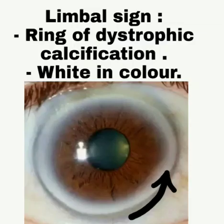An important clinical sign to mention here is the limbus sign — it is nothing but a ring of dystrophic calcification which is white in color. You can see the black arrow marking the white ring in the image. The differential diagnosis for this is arcus senilis.